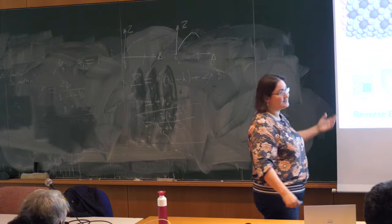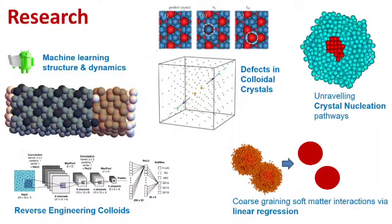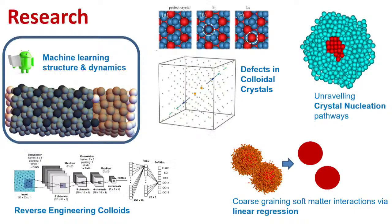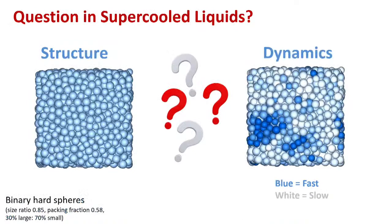Just in case you don't know who I am, my name is Laura Fillion and I do research on a wide variety of systems. One of the underlying themes is that it's usually colloidal systems. My research has looked at machine learning structure and dynamics in a variety of systems. I'm rather fascinated by defects, and I've spent a fair bit of my career unearthing strange defects in colloidal systems. I've looked at crystal nucleation and recently done work on coarse-graining soft matter interactions using machine learning techniques and reverse engineering interactions between colloidal systems.